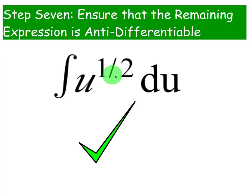To ensure that this expression is antiderivatable, I guess we will do step 7, just change square root of u to u to the 1 half. That way we can use the reverse power rule.